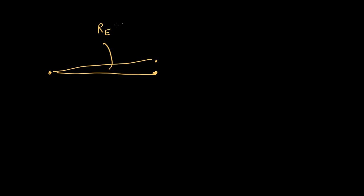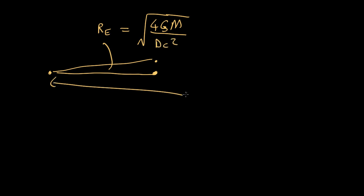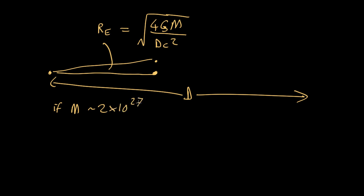For a planet to cause lensings as it orbits a star and to give lots of caustics, we need the angle — here's the Earth, here's the star, here's the planet — to be about the Einstein radius. The Einstein radius was given by the equation: root of 4GM over Dc squared, where M is the mass of the star and D is the distance to the background object being lensed. For planet mass, if M is about the mass of Jupiter — about 2×10²⁷ kilograms — the Einstein radius angle is about 1.5×10⁻¹⁰ radians.